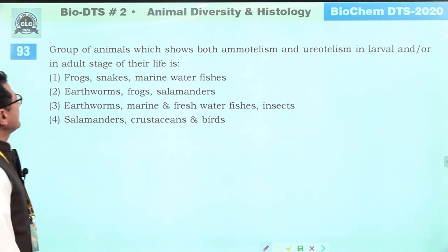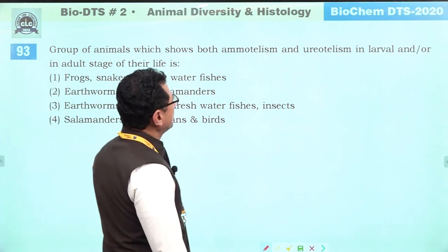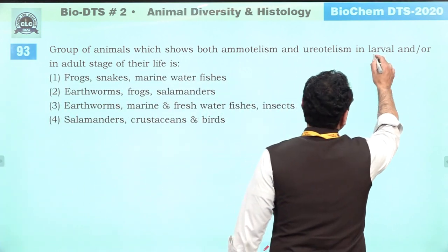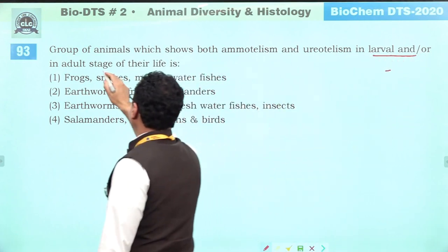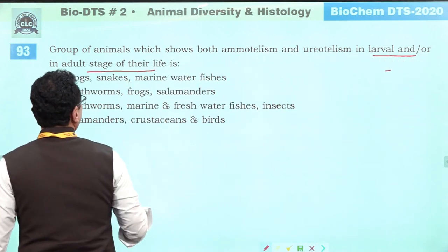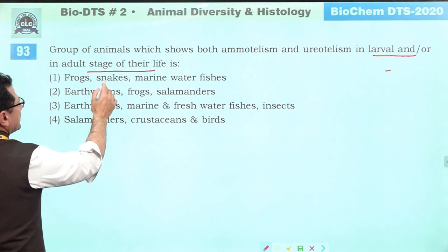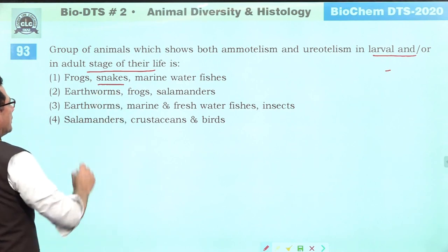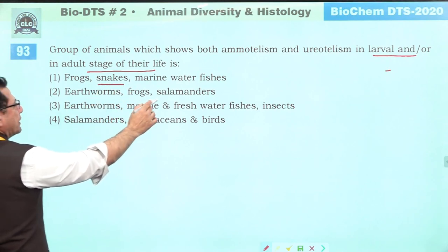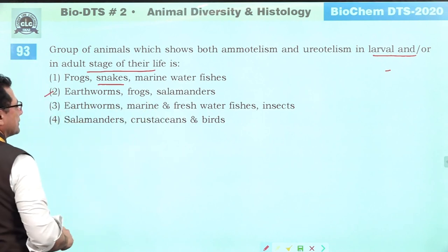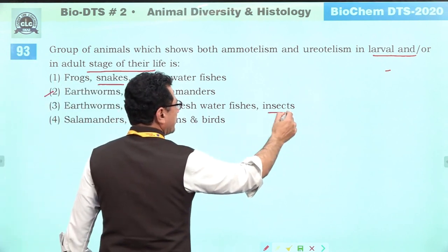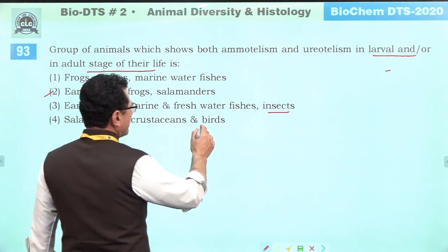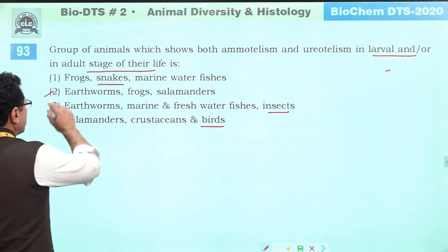Which animal group shows both ammonotelism and ureotelism in larval or adult stages? Earthworms, frogs, and salamanders — this is the right answer, as frogs are ammonotelic as larvae and ureotelic as adults. Snakes are uricotelic. Insects and birds are uricotelic. Answer is second.